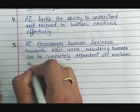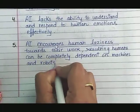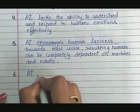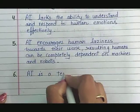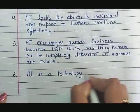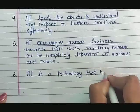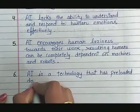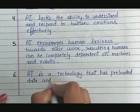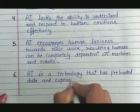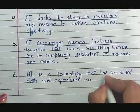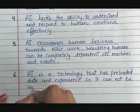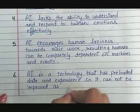Number 6: AI is a technology that has preloaded data and experience, so it cannot think or act as a human.